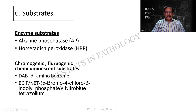Enzyme substrates - there are other substances which are used. One is the enzyme substrate called alkaline phosphatase and horseradish peroxidase. Also, you find that chromogenic, fluorogenic, or chemiluminescence substrates can be used, such as DAB, BCIP, NBT, etc. So these are all commercially available.